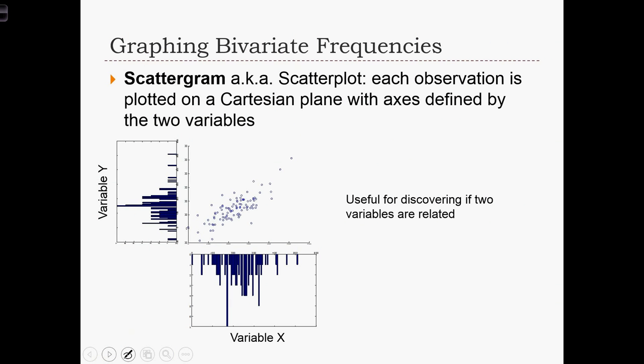Okay. What about graphing bivariate frequencies? So in this plot called a scattergram, or I'll often call it a scatter plot, each observation is plotted on a Cartesian plane with the axes defined by the two variables. And this plot is very useful for discovering if there's a relationship between the two variables.